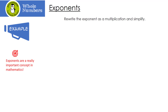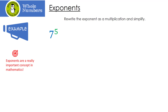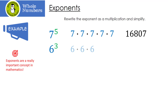We write the exponent as a multiplication and simplify. Seven to the fifth power — that means seven multiplied by itself five times: seven times seven times seven times seven times seven. That gives us 16,807. What about six to the third power? How many sixes will I multiply? Three. Six times six times six turns out to be 216.